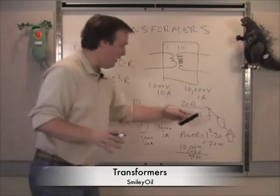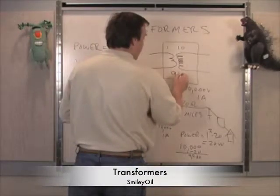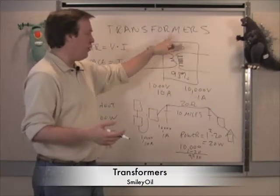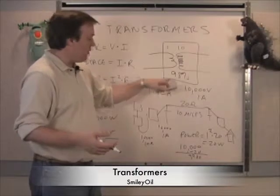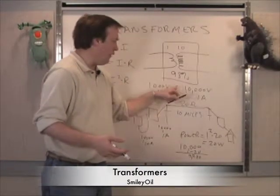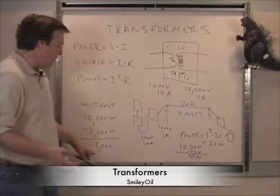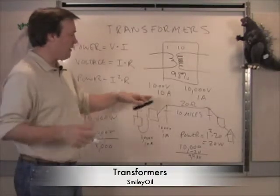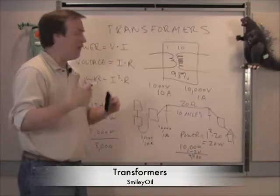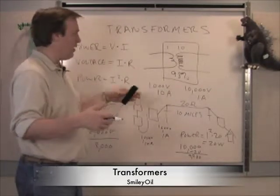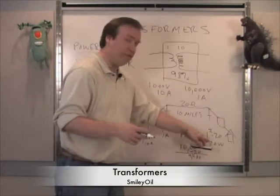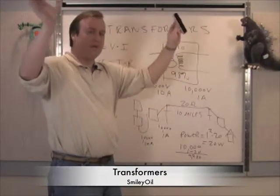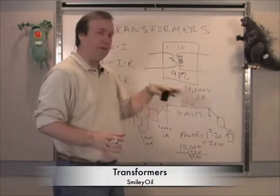One thing to note: transformers are only 98 percent efficient, so 2 percent goes up as heat in the transformer — maybe 200 to 400 watts of loss there. But you still have much better performance than a straight line. In the real grid, voltages are cranked up to tens of thousands or hundreds of thousands of volts. You really want to drive voltage as high as you can, because the current goes down by the square, so losses drop dramatically.